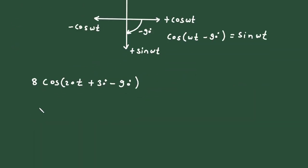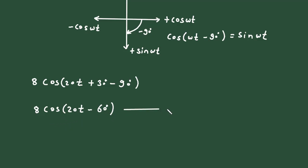This gives 8·cos(20t + 30° − 90°), and 30° − 90° = −60°. So the expression becomes 8·cos(20t − 60°). This is the standard sinusoidal form, and the equivalent phasor form is 8 at an angle of −60°.